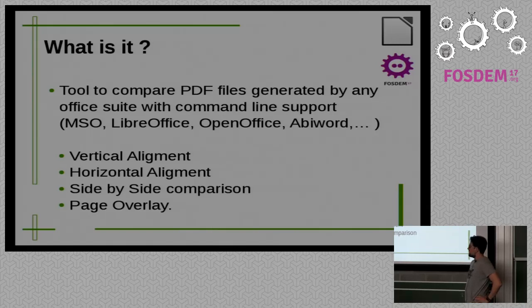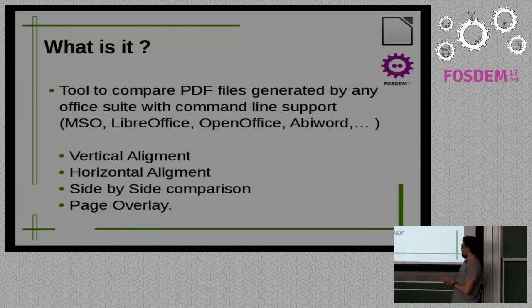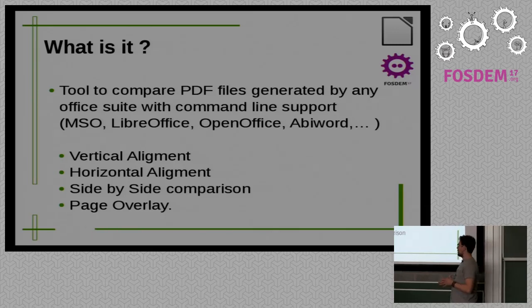Basically, what it is? It's a set of scripts you use to generate PDF files from different office suites. And then you compare those PDF files to see how different they are. You arrange those differences in a range from zero to five. There are four kinds of comparisons: vertical alignment, horizontal alignment, side-by-side comparison, and page overlay. You can use it with any office suite which supports a command line - Microsoft Office, LibreOffice, OpenOffice, all those.